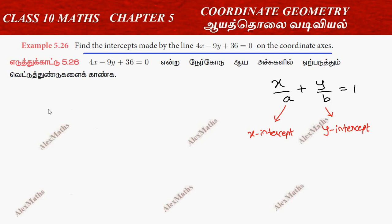We have 4x minus 9y plus 36. On the right side, minus 36. Throughout, divide by minus 36: 4x by minus 36 minus 9y by minus 36 equal to 1. If we cancel further...